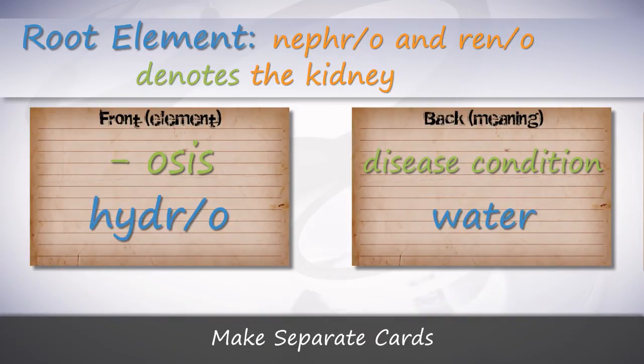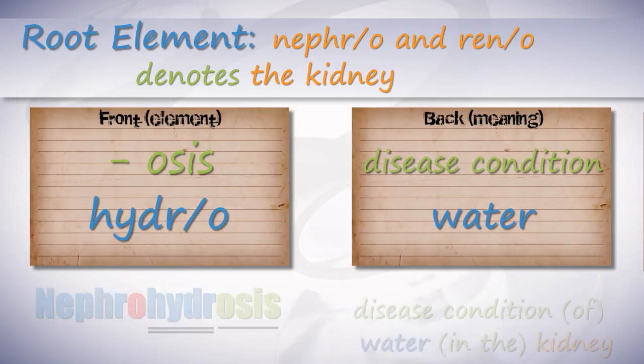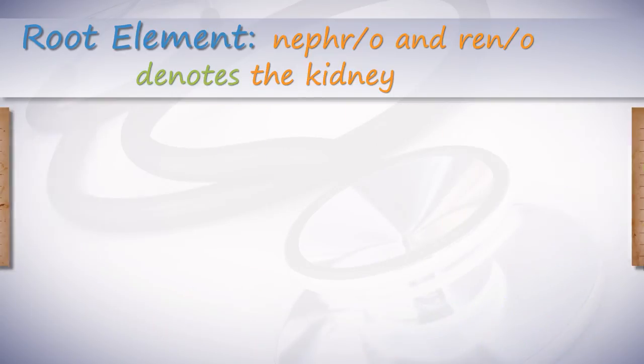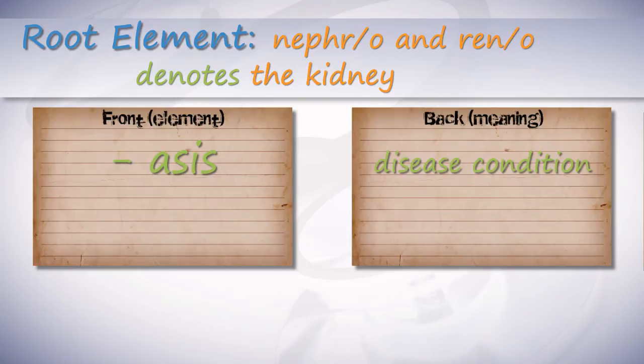-Osis is disease condition. Hydro means water. Nephrohidrosis means disease condition of water in the kidney.